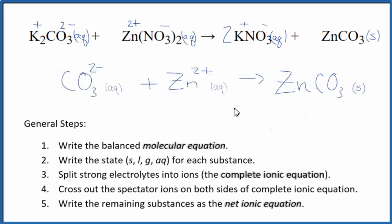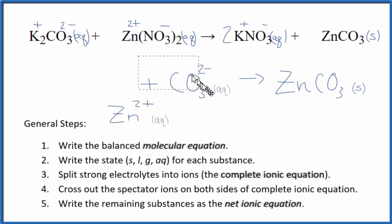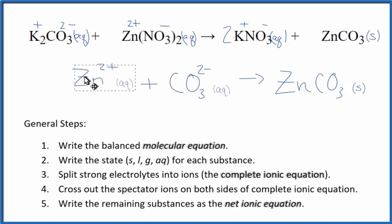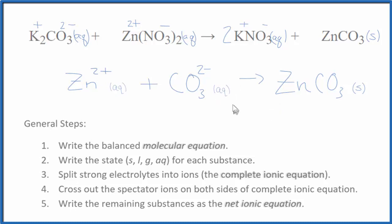This is our balanced net ionic equation for potassium carbonate plus zinc nitrate. You'll notice that charge is conserved — we have two minus and two plus, those balance out, giving a neutral compound. If you count the atoms up on each side, you'll see they're the same as well. Sometimes you'll see the positive ion put first — it doesn't really matter, it's the same thing, but looks a little nicer. This is Dr. B, and thanks for watching.